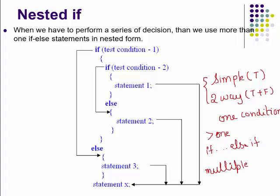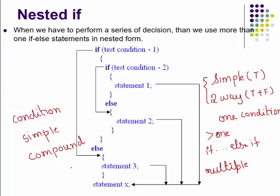It is called multiple branching because there are multiple branches arising from multiple conditions. The condition used in an if statement can be a simple condition or a compound condition. A simple condition is a simple relational expression, while a compound condition is a logical expression — a combination of two or more relational expressions joined with a logical operator like AND or OR. This is called a compound condition.